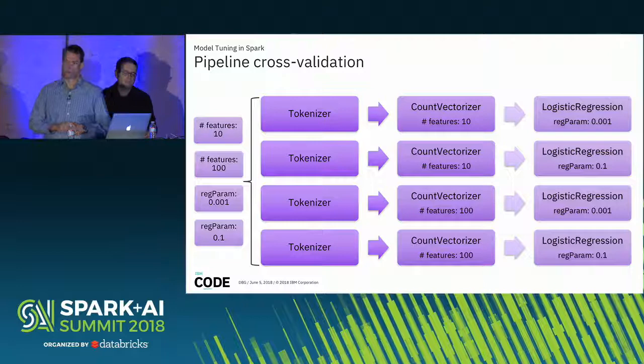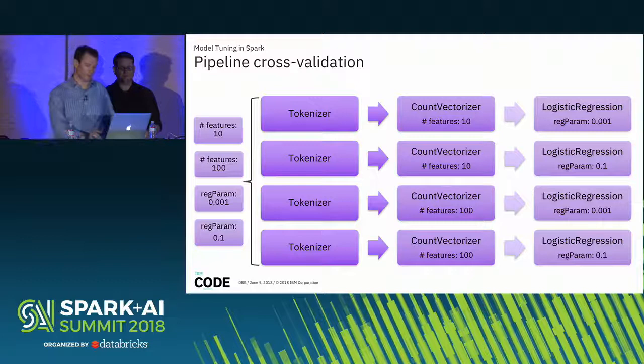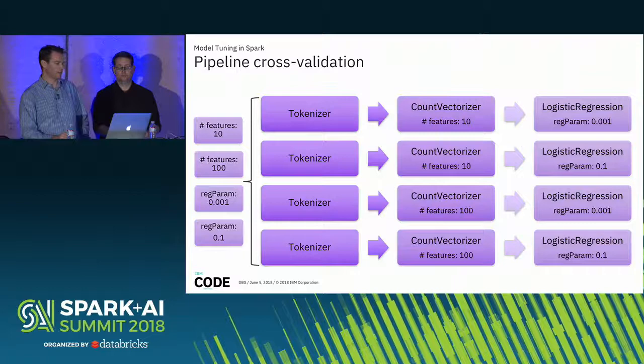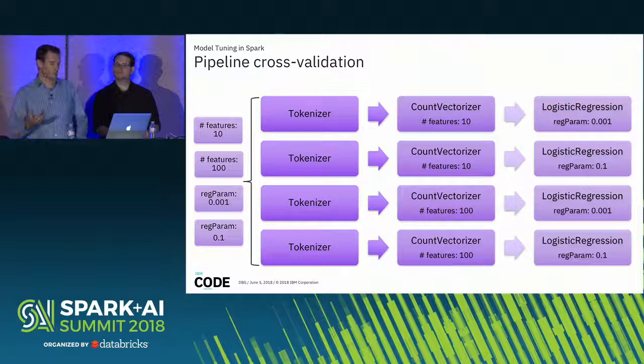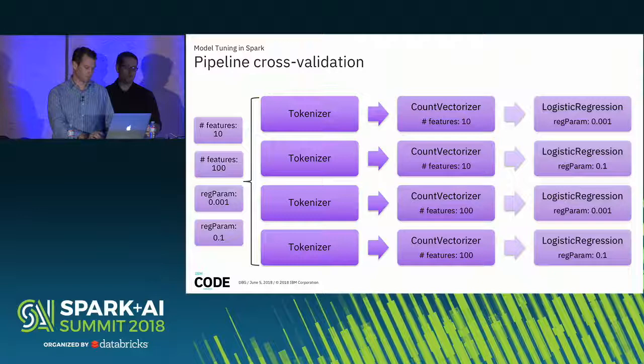The way we typically do this in most frameworks, and certainly in Spark, is grid search. For every combination of parameters, we create a unique pipeline with those parameter settings for each individual component, and we train and evaluate for each of those pipelines. In this case, we've got two sets of parameters with two settings each, creating four different unique combinations. The tokenizer never changes as it has no parameters we're tuning, but the other two components will have their parameters set in each particular pipeline.